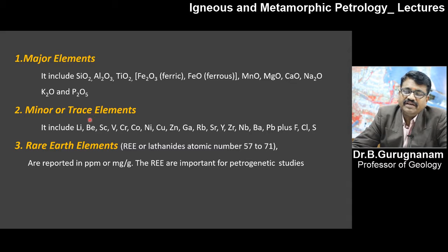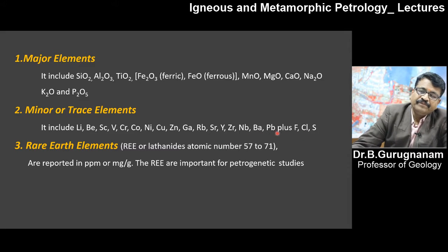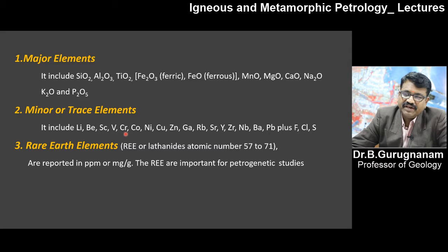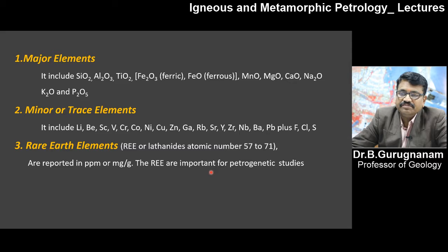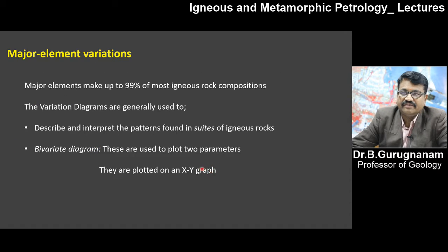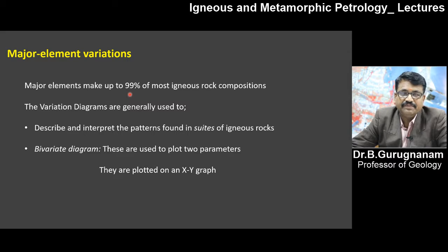Minor elements are present in very small amounts — lithium, beryllium, strontium, vanadium, chromium, cobalt, nickel, zinc, and so on. For rare earth elements, the lanthanide group between atomic numbers 57 to 71 are reported in ppm (parts per million) or milligrams per gram. Rare earth elements are important for petrogenetic studies — if you want to assess the origin of a rock type, REE study is highly required. Major elements make up 99% of most igneous rock composition.